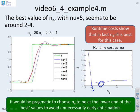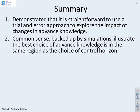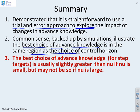Just a reminder, it is pragmatic often to choose NA to be at the lower end of the best values where that's possible. So, a summary. We've demonstrated it's straightforward to use a trial and error approach to explore the impact of changes in advanced knowledge. And common sense, backed up by simulations and plots of the cost function, illustrate that the best choice of advanced knowledge is usually in the same region as the choice of the control horizon.